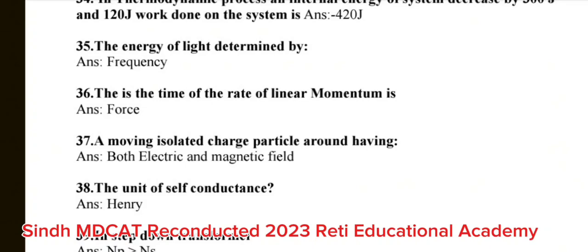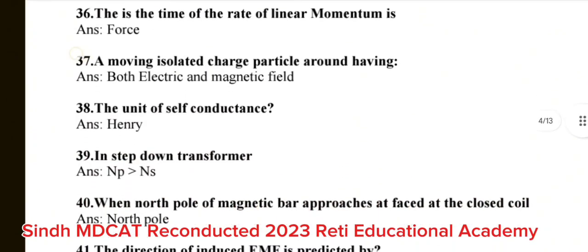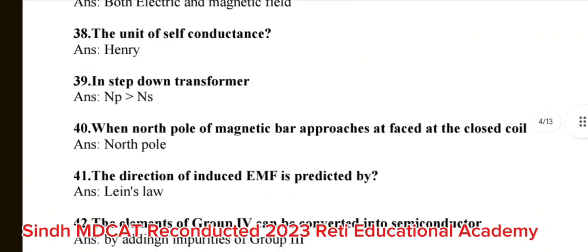Question number 38: The unit of self conductance is Henry. Question number 39: In step down transformer, the correct answer is NP is greater than NS. Question number 40: When North Pole of magnetic bar approaches at first at the closed coil, the correct answer is North Pole. Question number 41: The direction of induced EMF is predicted by? The correct answer is Lens law.